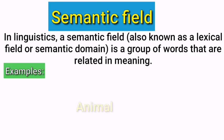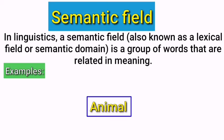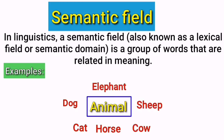Just look at the word 'animal' as an example. This word has many related words like dog, cat, horse, cow, sheep, elephant, etc. All of these words are related in meaning with the word 'animal.' If you say, what is a dog? The answer is it is an animal. If you say, what is a cat? The answer is it is also an animal. All are related in meaning — you can simply say all of them are animals. So this is called a semantic field in semantics.